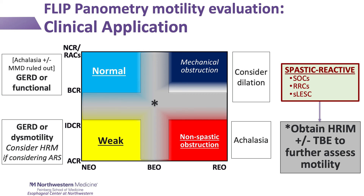The non-spastic obstruction planometry pattern will most frequently include patients with achalasia. If there is a high pretest probability for achalasia based on timed barium esophagram and endoscopic appearance, this again is a potential scenario in which HRM may not be needed. Though if there is uncertainty, or if other FLIP planometry features suggest spastic achalasia, HRM will help confirm the diagnosis and potentially help tailor myotomy length.